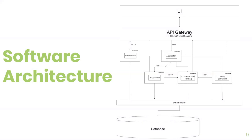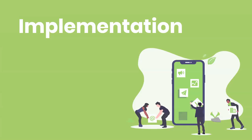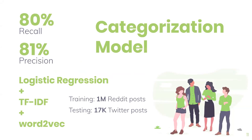In our system architecture, each module runs on its own, making it easier to add new features or detect problems. We have our UI — the mobile application — which interacts with the API gateway, using an authentication service to authenticate the user. We have our aggregation service which collects and organizes the data, then passes it to other services. We also have the categorizer, content-based filtering, and entity extraction services that take the aggregated data, fetch features from the database, analyze it, and return content to the user through the API gateway.